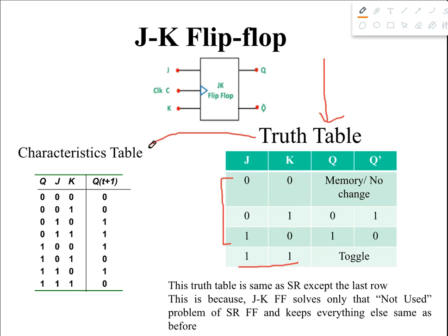Now we're going to build the characteristic table of JK flip-flop using the truth table. The characteristic table has two parts: in the left part we write the present state and the flip-flop inputs J and K, giving three variables Q, J, and K — eight possible combinations from 0,0,0 to 1,1,1. In the right part we write the next state, Q(t+1).